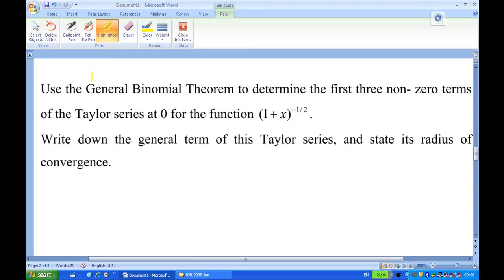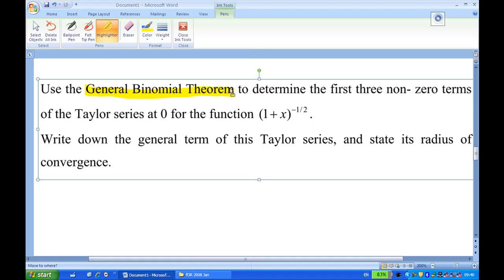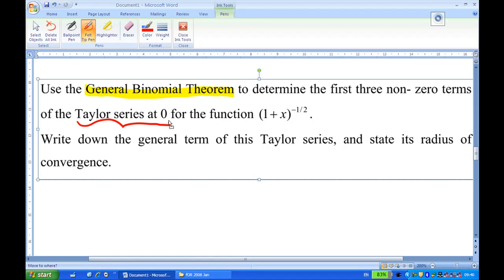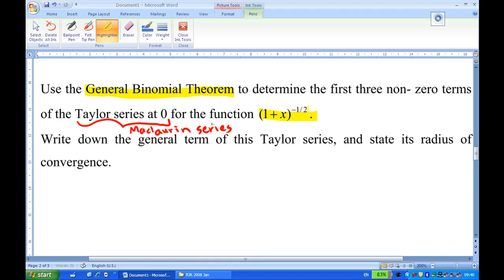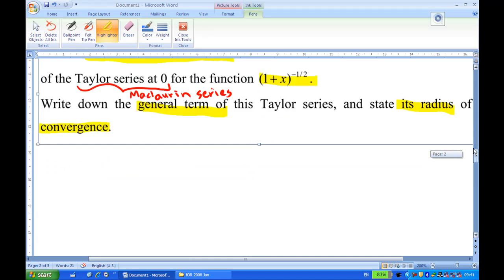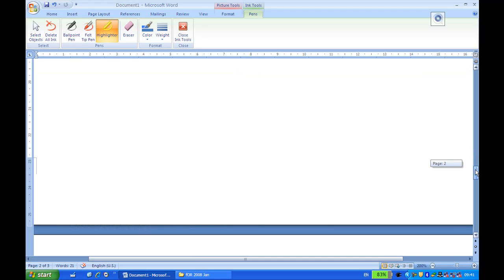How to use the general binomial theorem to determine the first three non-zero terms of the Taylor series at zero. We also have a name for this, the Maclaurin series, just in case you forgot. For the function, the function in this case is 1 plus x to the power minus half. What we require is to write down the general term of this series and state the radius of convergence. In order to do this, we must recall what the general binomial theorem says.